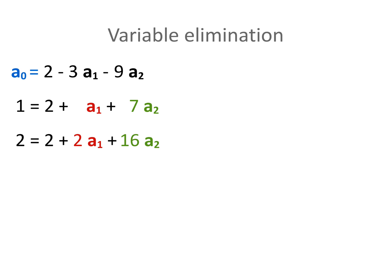We can do the same trick for a1 using the second equation. This equation tells us that a1 must be equal to 1 minus 2, which is minus 1, minus 7 times a2. And again, we can drop the original equation.